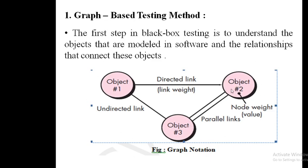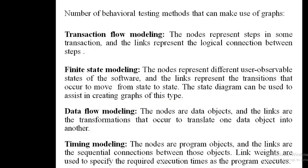This is the total representation of the graph-based method and the concept of graph-based testing — understanding objects and the relationships between them in black box testing. These graphs may also be used in a number of behavioral testing methods. In a graph, we have two things only: nodes and links. There are four different types of behavioral testing methods that use graph-based methods.